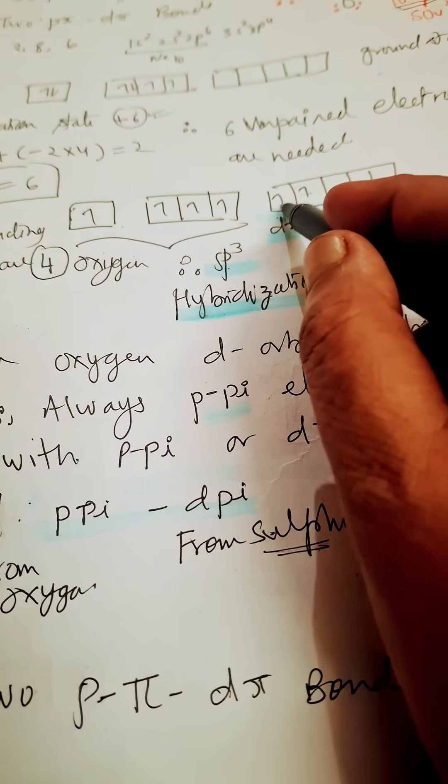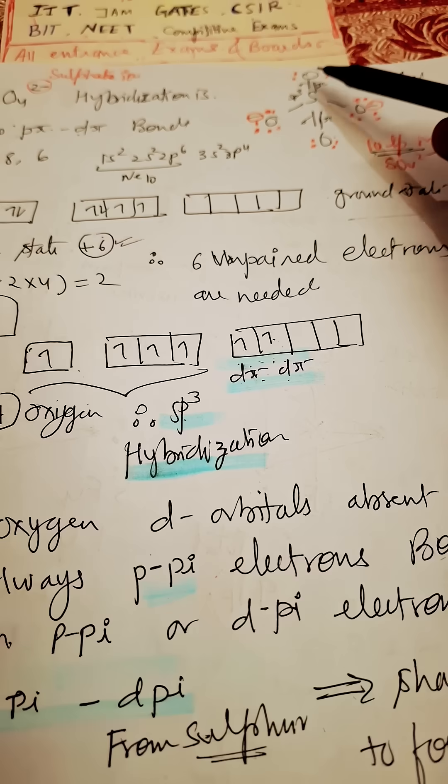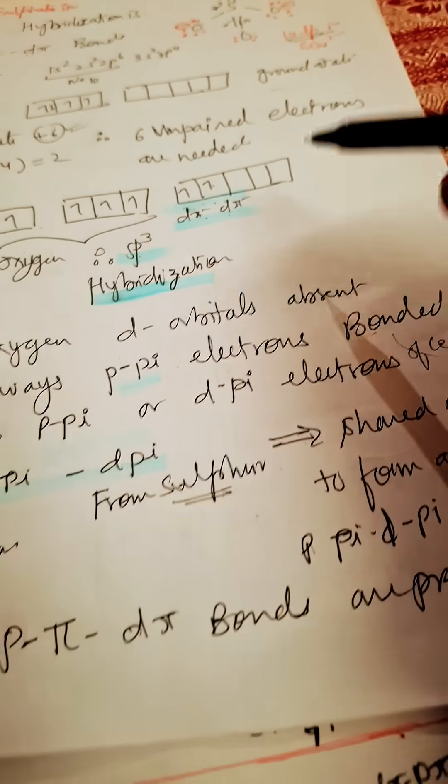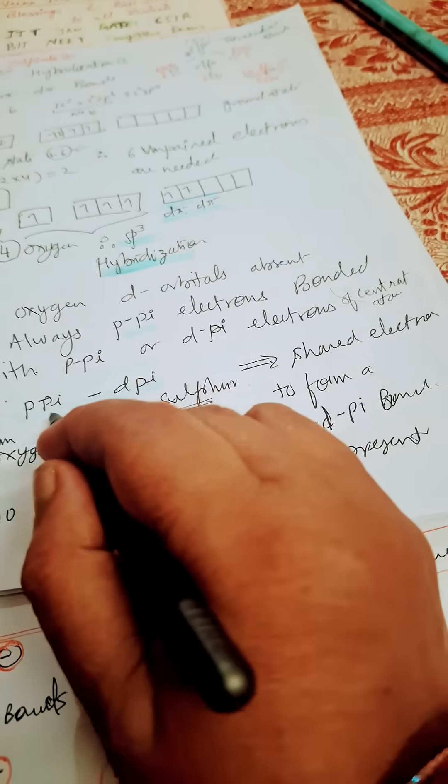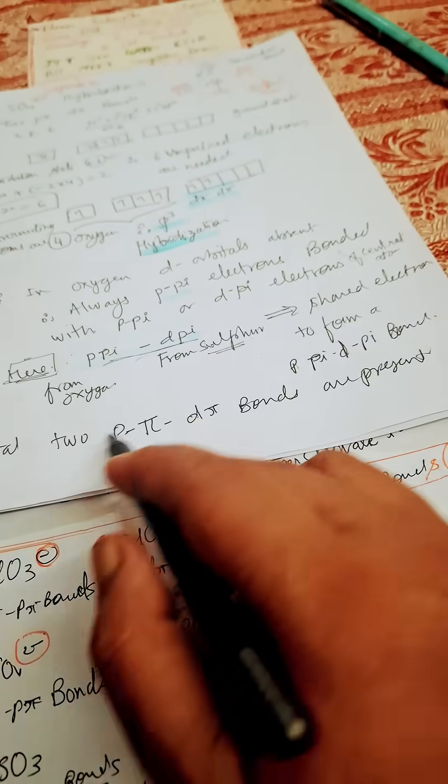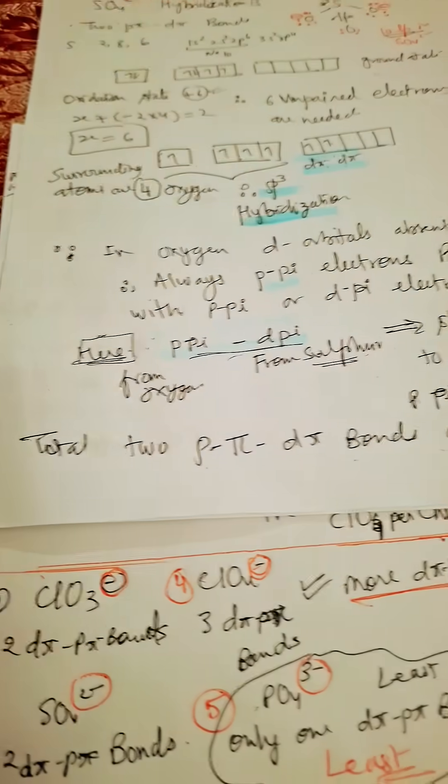And now d-pi p-pi bonding: the d orbital here is having two electrons, and they will form two pi bonds with oxygen. This is called two d-pi p-pi bonds. So we will call two d-pi p-pi bonds are present in case of SO4 2-.